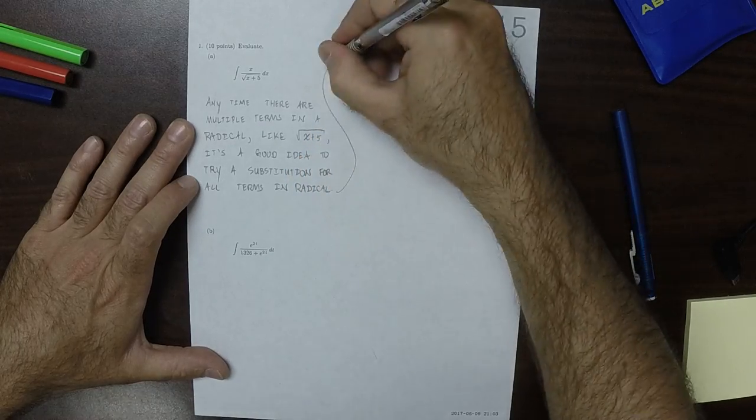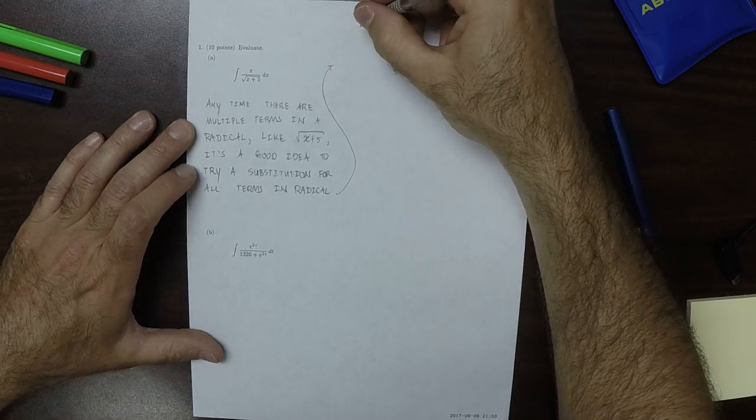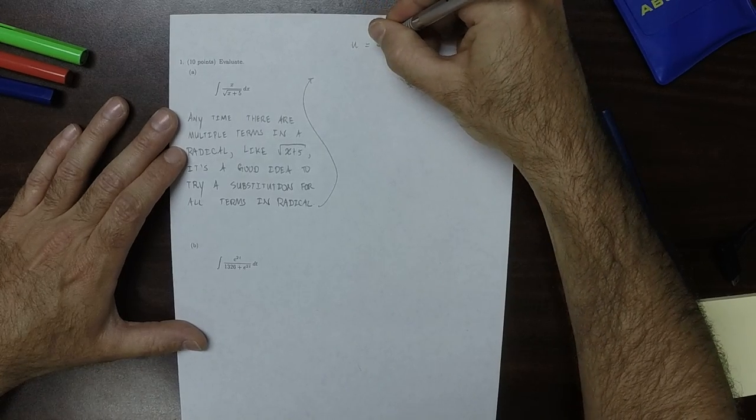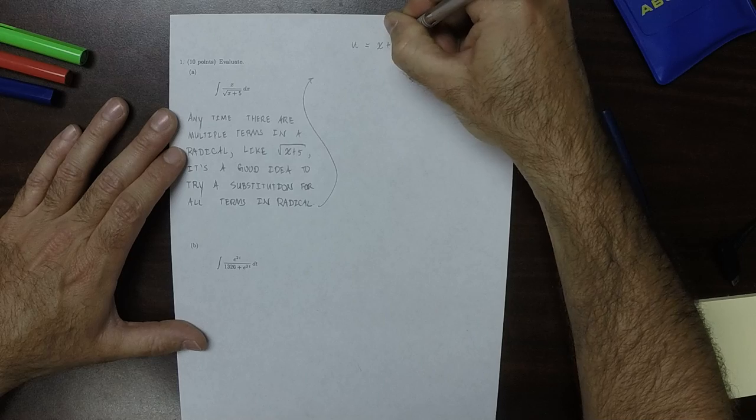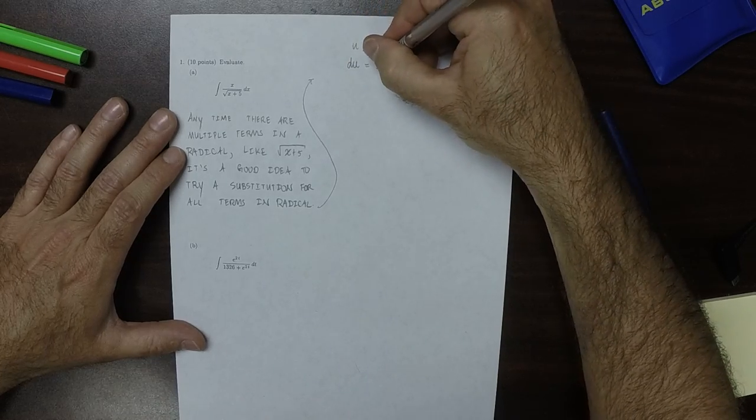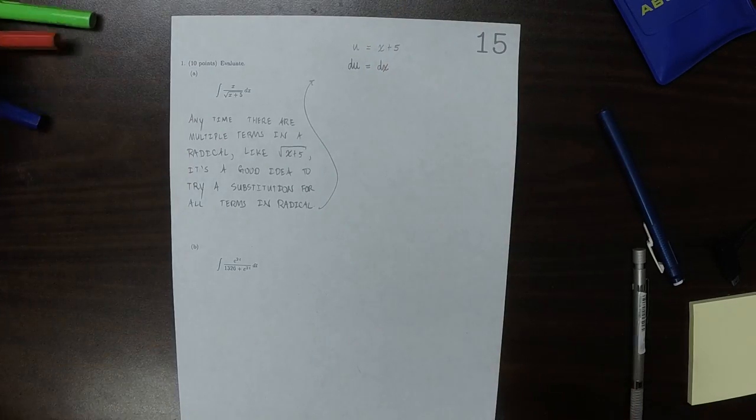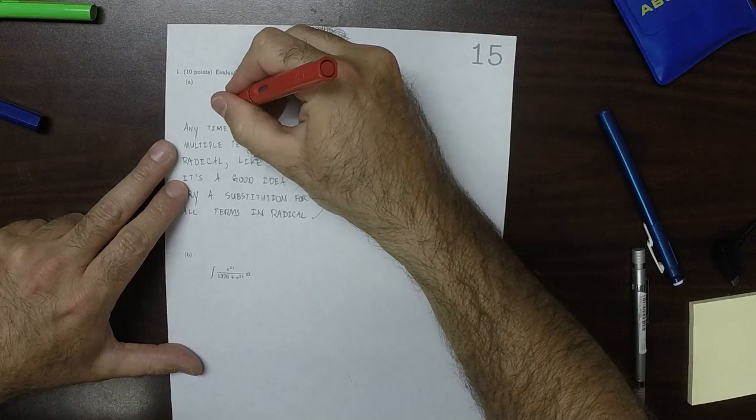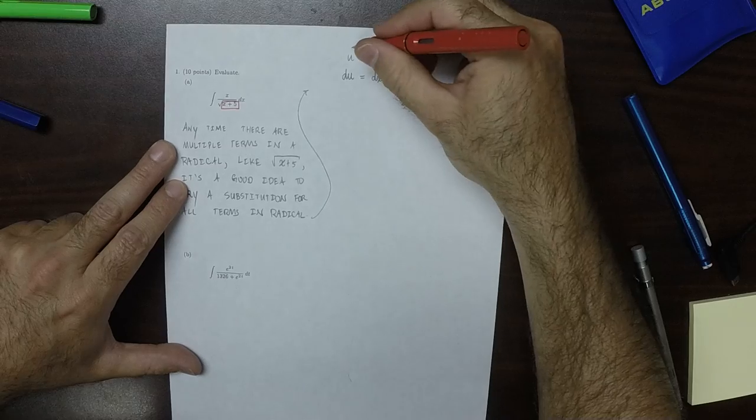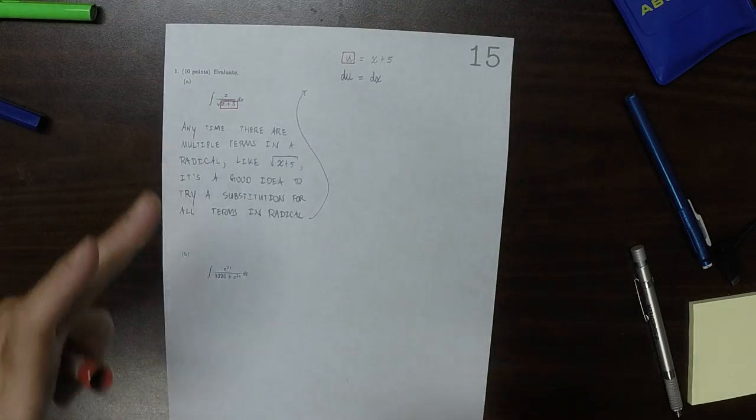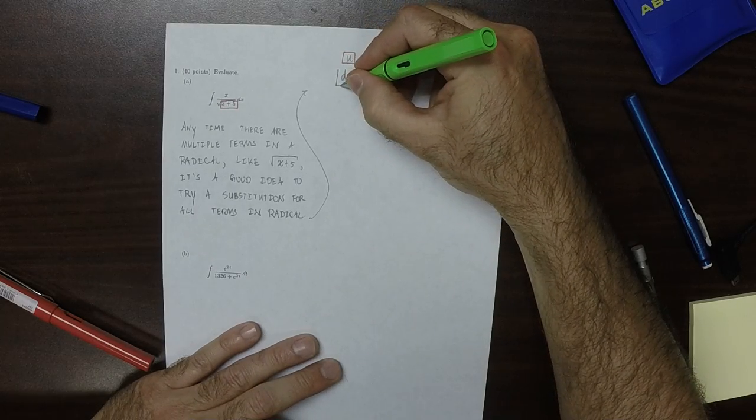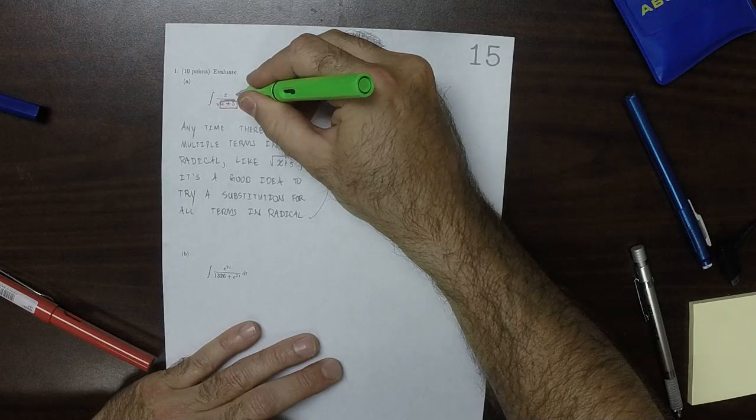So specifically, we're going to try u is equal to x plus 5, the terms that are inside the radical. So then du is dx. So let's see what we're able to cover with that. So we have u is x plus 5, so that's covered by that. And we have du is dx, so that covers that part.